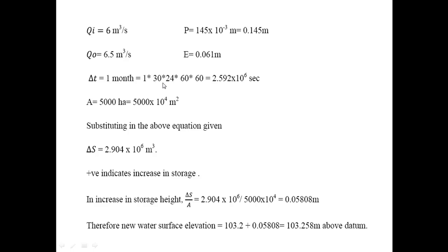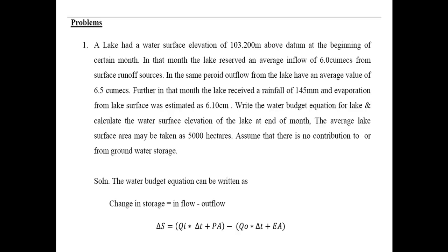For the time interval, one month has 30 days, one day has 24 hours, one hour has 60 minutes, and one minute has 60 seconds. This gives a total delta t of 2.592 times 10 to the power 6 seconds. The total area A is equal to 5,000 hectares, which equals 5,000 times 10 to the power 4 square meters. Substituting all values in the above equation, we get the total change in storage delta S.